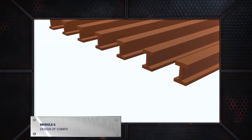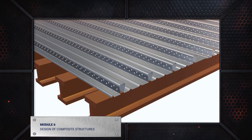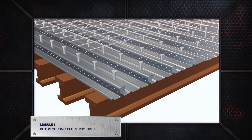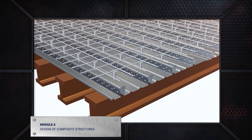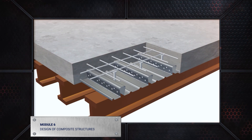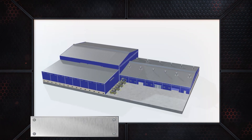Module 6 covers composite materials. You will learn everything about materials of different properties combined together, their characteristics, and where to use them.